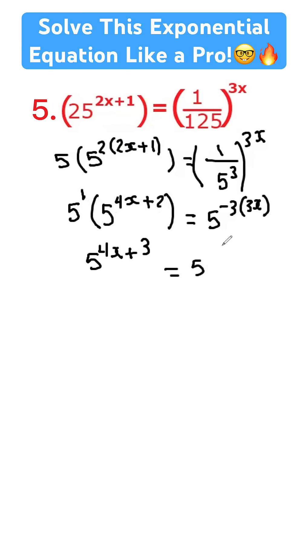Equals 5, and here we're going to multiply the exponents and get negative 9x. Now at this stage, since we have one base here and one base there, we can cancel the bases. We have 4x plus 3 equals negative 9x.